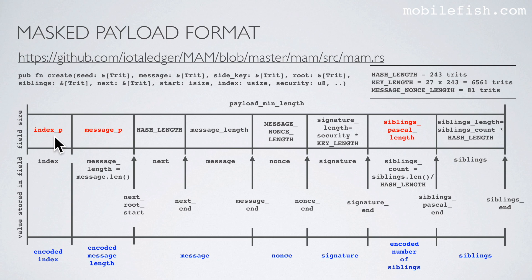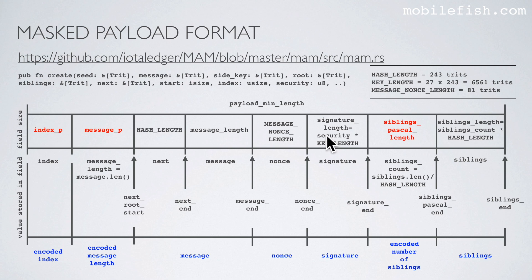The encoded number of siblings is stored in this field and the siblings are stored in this field. The index is stored in this fixed size field. The message length is stored in this fixed size field. The next root is stored in this fixed size field. The message is stored in this variable size field, and the field size is stored in this field. The nonce is stored in this fixed field size. With the nonce value you can retrieve the security level, which I will discuss later on. The signature is stored in this variable size field and the field size depends on the security level. The siblings count is stored in this fixed field size and the siblings are stored in this variable size field — the size depends on the siblings count.